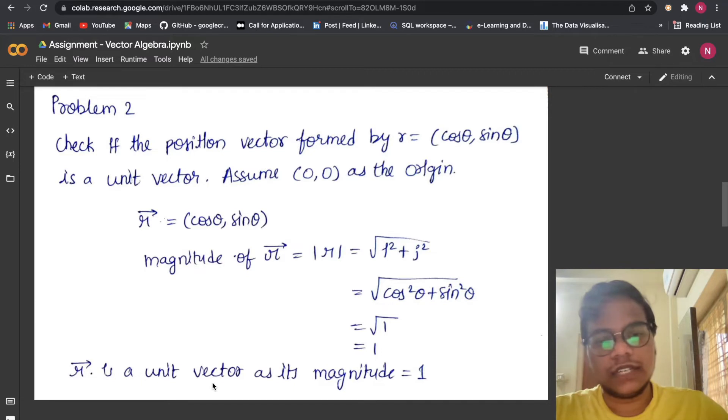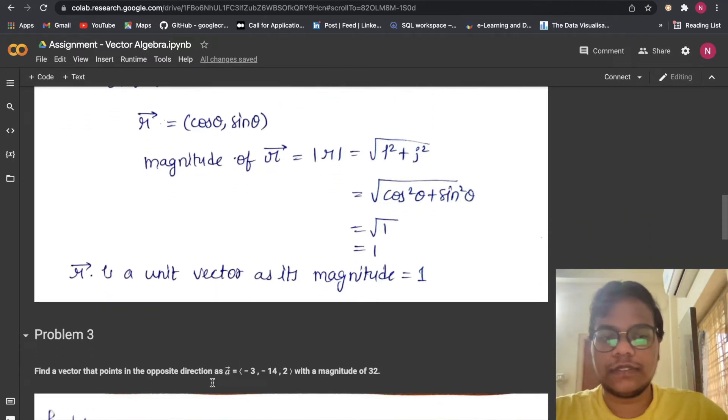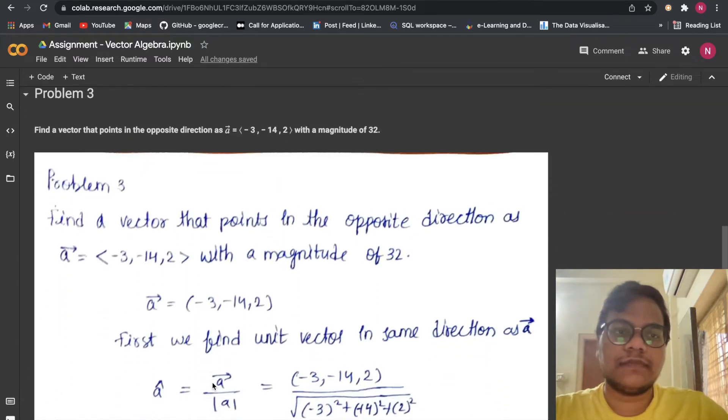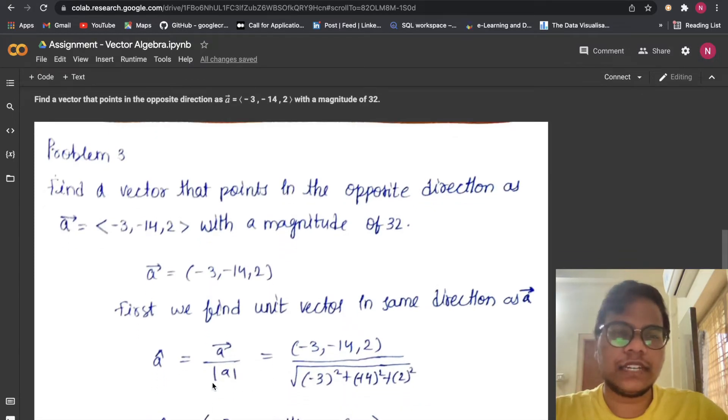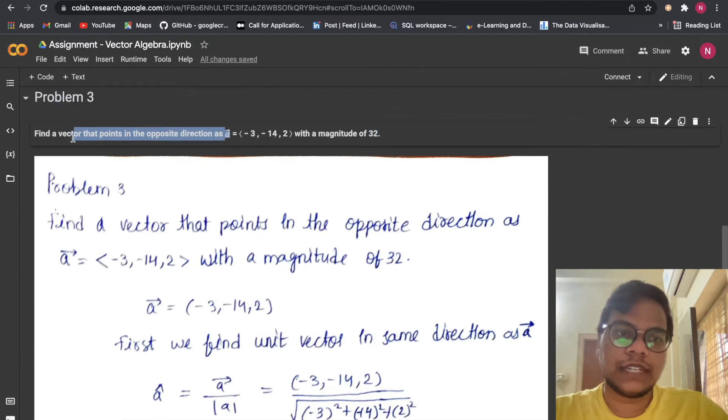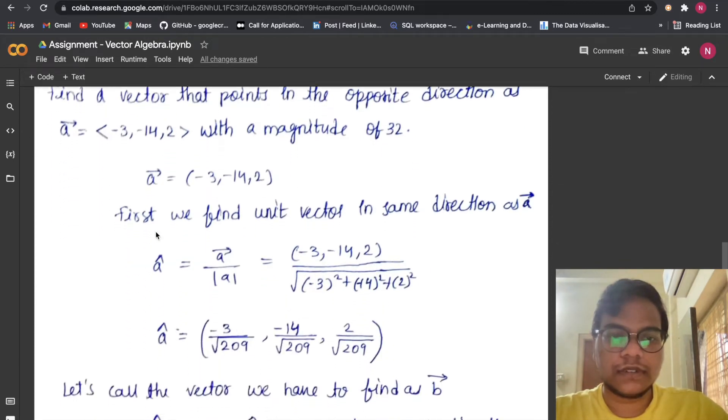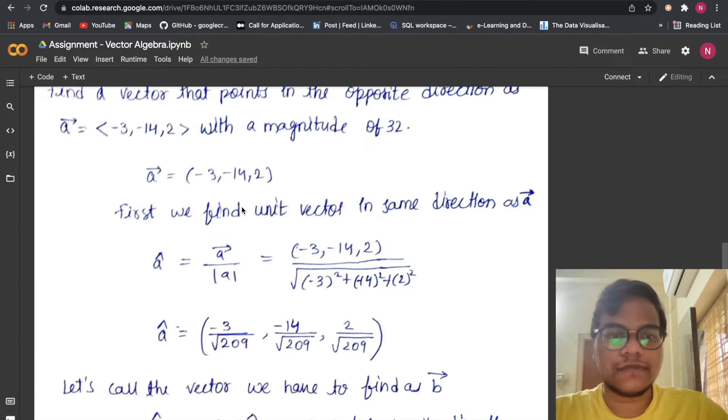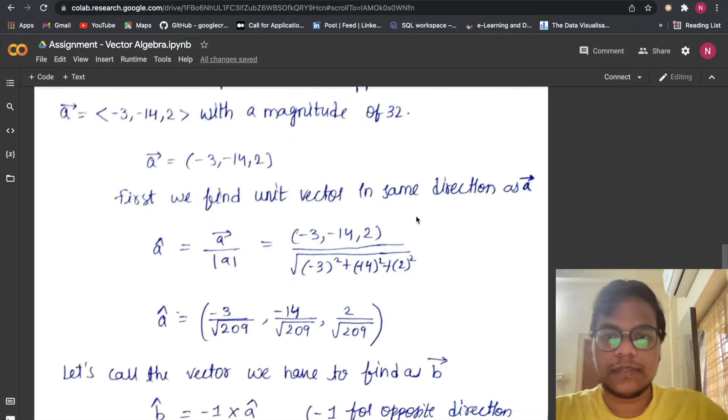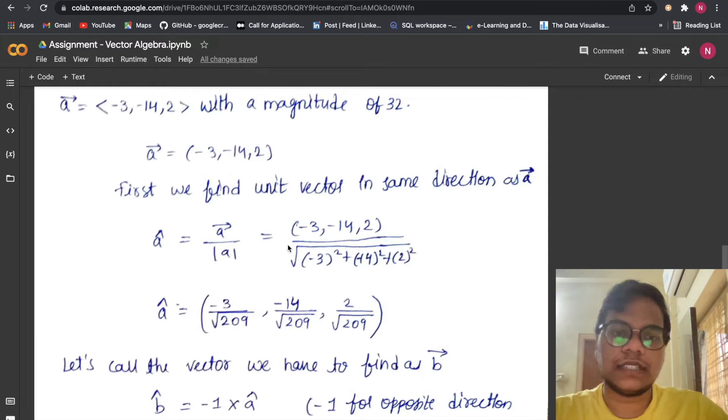Problem 3: Find a vector that points in the opposite direction as ā = (-3, -14, 2) with a magnitude of 32. So first, what we are going to do is find the unit vector in the same direction.